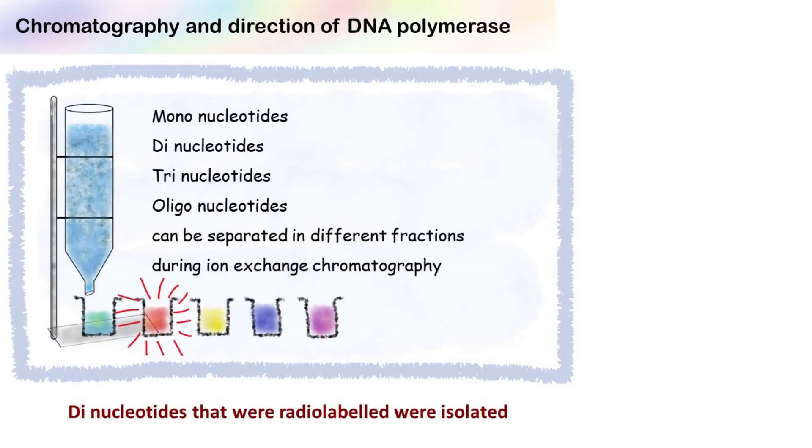During the experiment, Arthur Kornberg collected dinucleotides that were radio labeled. So there are two possibilities. Possibility one: the direction of DNA polymerase is from five prime to three prime.